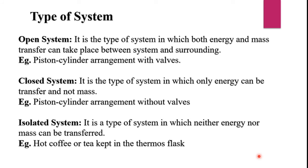Next is an isolated system. It is a type of system in which neither energy nor mass can be transferred. The example is hot coffee or tea kept in a thermos flask. When a hot liquid is kept in a thermos flask, its temperature never changes — there is no transfer of energy and no transfer of mass. But speaking very frankly, a thermos flask is not an ideal isolated system, because after some time the temperature of the liquid gets lowered, meaning some amount of energy is being transferred through the thermos flask.